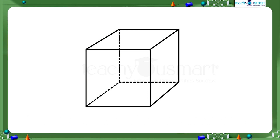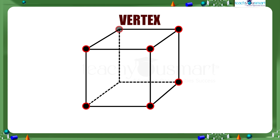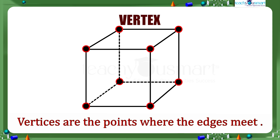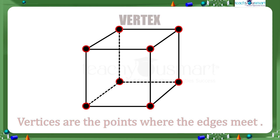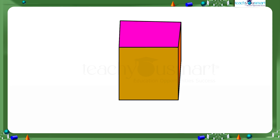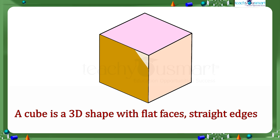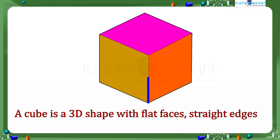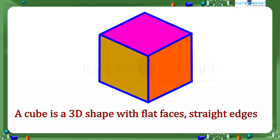A point where two or more edges meet together is called a vertex, or corner of the cube. So vertices are the points where the edges meet. That is, a cube is a 3D shape with flat faces, straight edges, and sharp vertices.